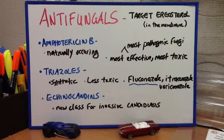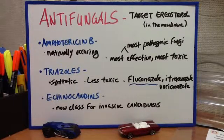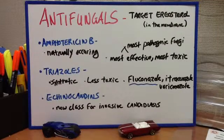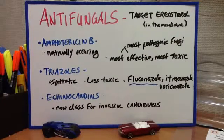Amphotericin B is naturally occurring and it is fungicidal for most pathogenic fungi in humans. It is the most effective antifungal, especially for systemic diseases, but it is also the most toxic.